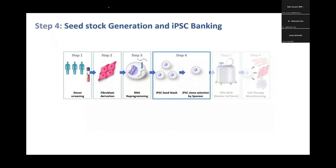The next important step: now that you've got your iPSC lines, you have reprogrammed cells with multiple clones, and you want to make a seed stock of maybe 20 to 40 vials. There are two important questions — how many passages and what tests confirm you've got the right cells — and whether it should be a clonal or polyclonal population. There is some controversy in the field.